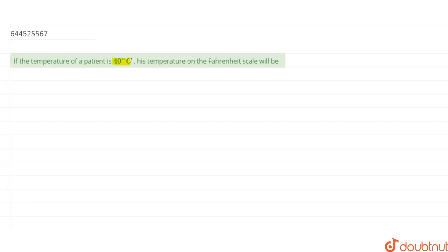Let's start the solution. We know that the relation between temperature in Celsius and temperature in Fahrenheit is given by this equation: TC upon 100 equals TF minus 32 upon 180, where TC is the temperature in degrees Celsius and TF is the temperature in Fahrenheit. We have to find the value of TF.